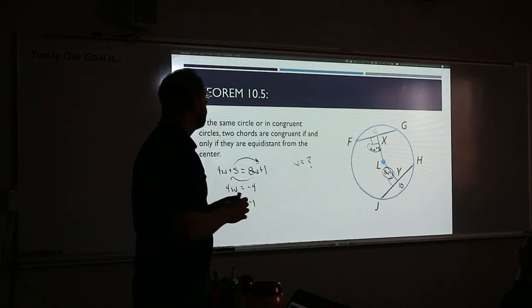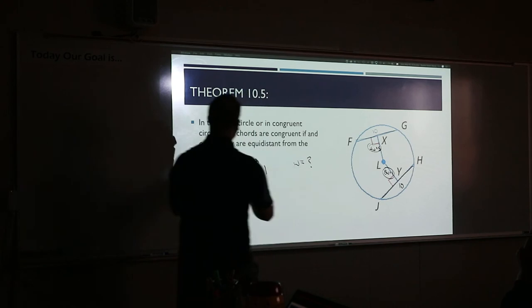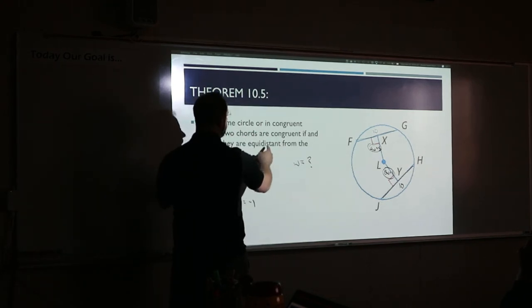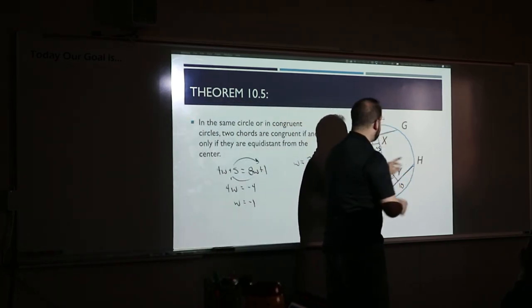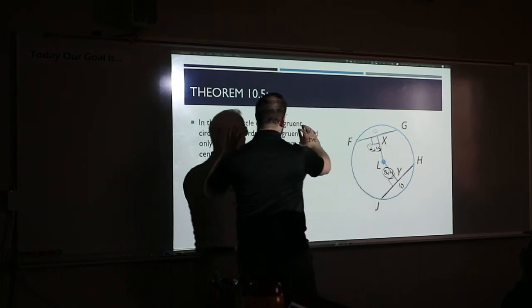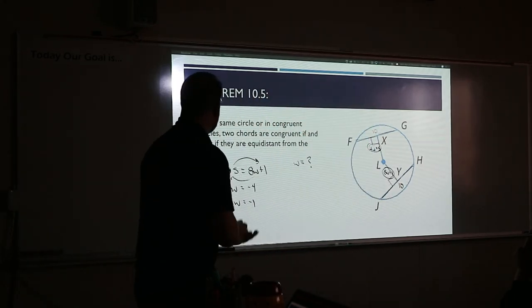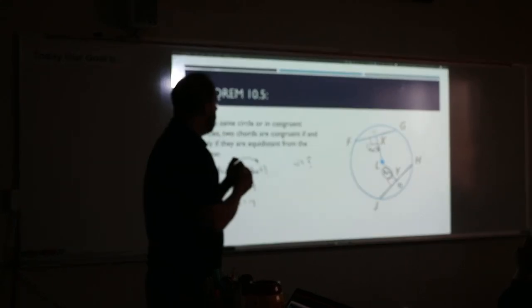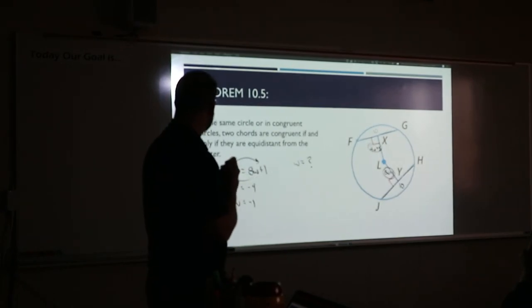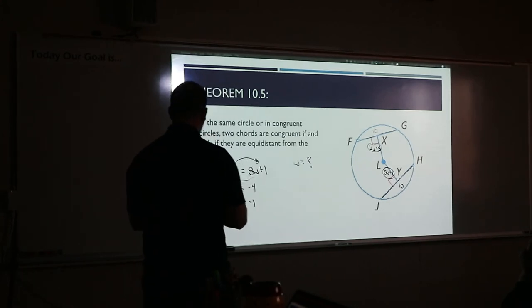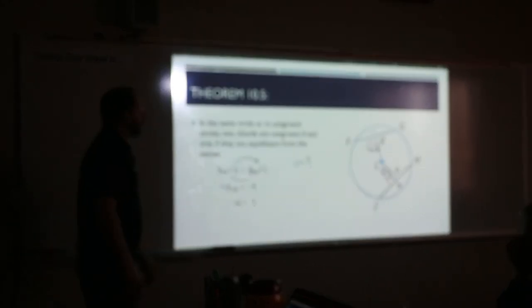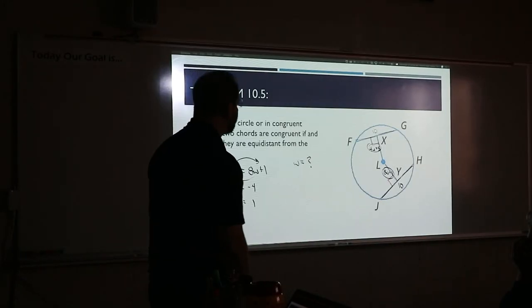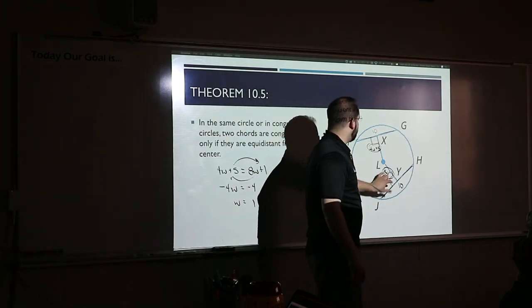Student: I'm confused how you know 4w plus 5 equals 8w plus 1. Teacher: On this one, two chords are equal if and only if they're equidistant from the center. This whole stick was 10 and that whole stick was 10, so that forced the two distance sticks to be the same. Actually, I think that's w equals 1 after dividing by negative 1. So plugging 1 back in, these are both 9. So each distance stick turns out to be 9.